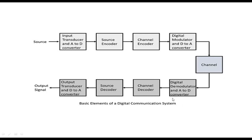On the receiver side, you demodulate it. If it is analog, then you have to make it digital again so that you can do the decoding. Then you decode the channel, then source decoding should be done. Then you put an output transducer — a speaker or something — so that you convert that into an analog signal. This is how it works. It is actually a digital transmission block diagram. You have a series of encoders, digital modulator, channel, digital demodulator, then a series of decoders, and then you get the signal back.